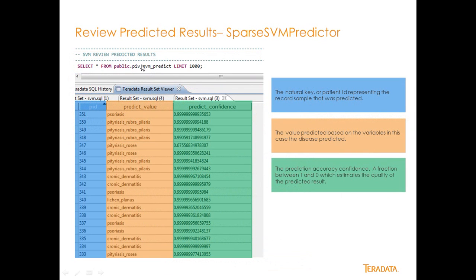And the output looks like this. What you'll see is, I actually created a table from the previous PIV SVM predict. And I'm just running the output. So each one of these patient observations was diagnosed a predicted value of this disease class. And it was given this confidence level. And this confidence level is basically a number between zero and one. And it just basically says, what's the quality of my prediction?